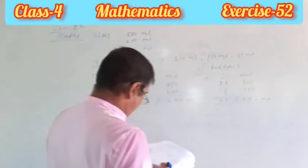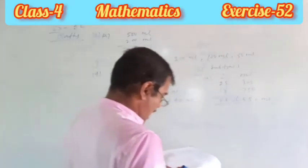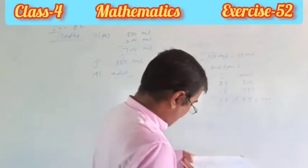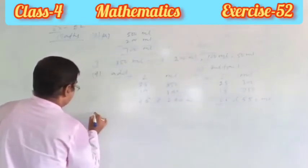Question number eight: a container has 2055 milliliters of water. How many liters and milliliters of water is in the container?